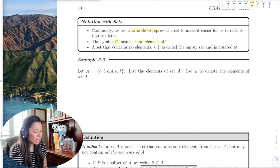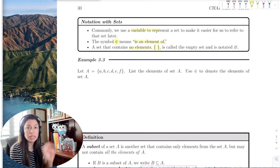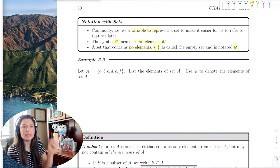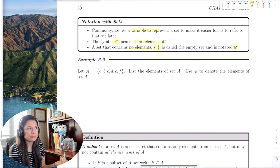And the set that contains no elements, it can be the curly brackets with nothing in it, or an empty set, which is noted by like a circle and a slash through it.